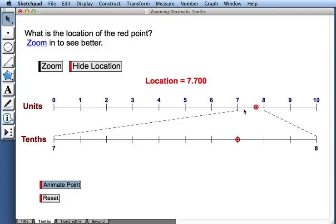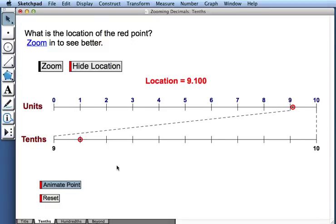So that I see here that as the point moves between 8 and 9, 8 and 9 are my endpoints on the tenths number line. And when the point gets to a value between 9 and 10, my endpoints are now 9 and 10. And I can read the exact location of the point as it moves from tick mark to tick mark.